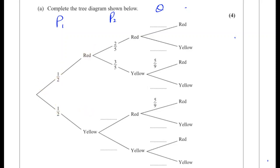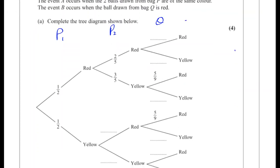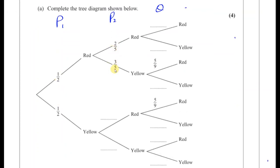The first pick is quite obvious because bag P has 3 red and 3 yellow, so that's 3 out of 6 and 3 out of 6 — a half and a half. They already told us the probabilities: 2 fifths and 3 fifths if you picked a red first, and then a yellow and a red from bag P, then a yellow from bag P. And they've already told us the probability of one branch is 5 over 9, so the other must be 4 over 9.